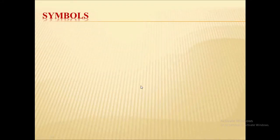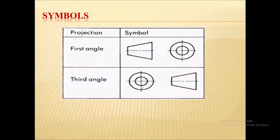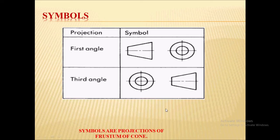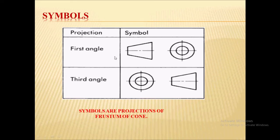Next, based on the symbols — this is very important to differentiate first angle projection and third angle projection. These symbols for first angle and third angle are nothing but the projection of a frustum of a cone. You can see these symbols in the drawing title block to identify whether the drawing is of first angle or third angle projection.